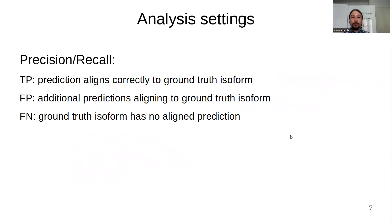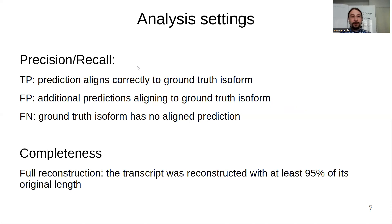Now I want to talk about our analysis. We perform a precision-recall analysis. We define a true positive if a prediction aligns correctly to a ground truth isoform. A false positive is if more than one prediction aligns to the same ground truth isoform. A false negative is if a ground truth isoform has no aligned prediction. We also use the notion of completeness, where a full reconstruction is defined as a transcript reconstructed with at least 95% of its original length.